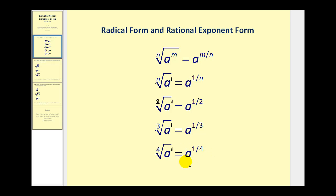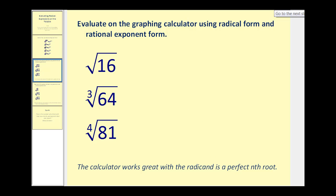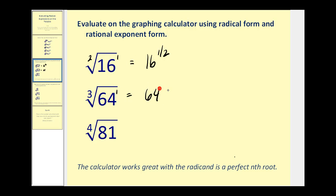Let's take a look at some examples. If we want to evaluate three radical expressions on the graphing calculator, we can do so in radical form, or we can rewrite them in rational exponent form. The square root of 16 is equal to 16 to the power of one-half. The cube root of 64 is equal to 64 to the one-third power. The fourth root of 81 is equal to 81 to the one-fourth power.